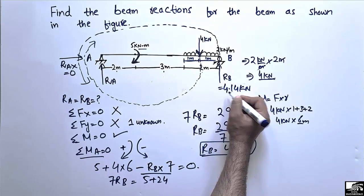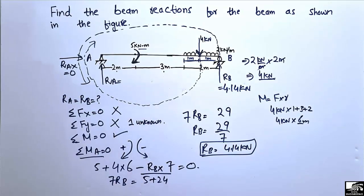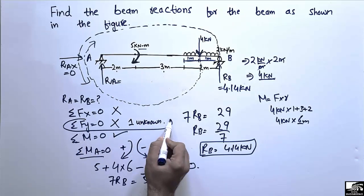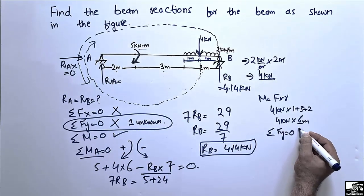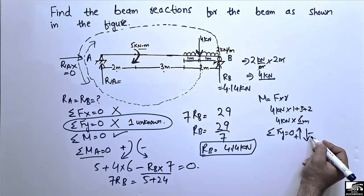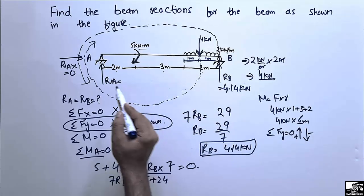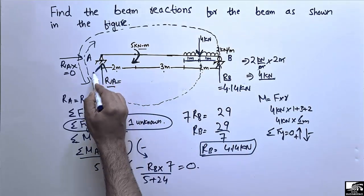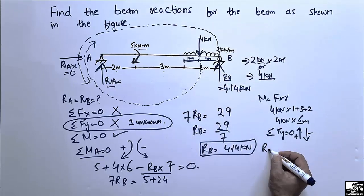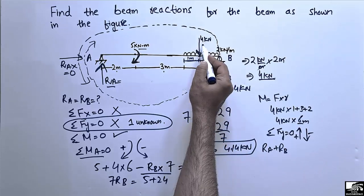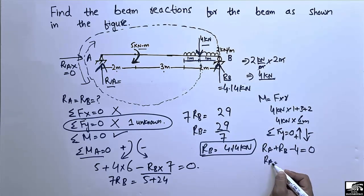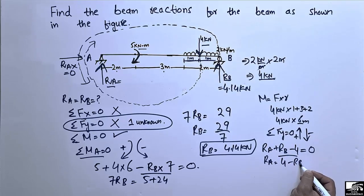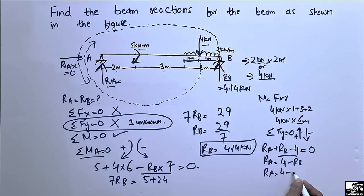Now with RB known, we have only one unknown left, so we can use the summation of vertical forces equals zero. Taking upward forces as positive and downward forces as negative: RA + RB − 4 = 0. Therefore RA = 4 − RB = 4 − 4.14 = −0.14 kilonewtons.